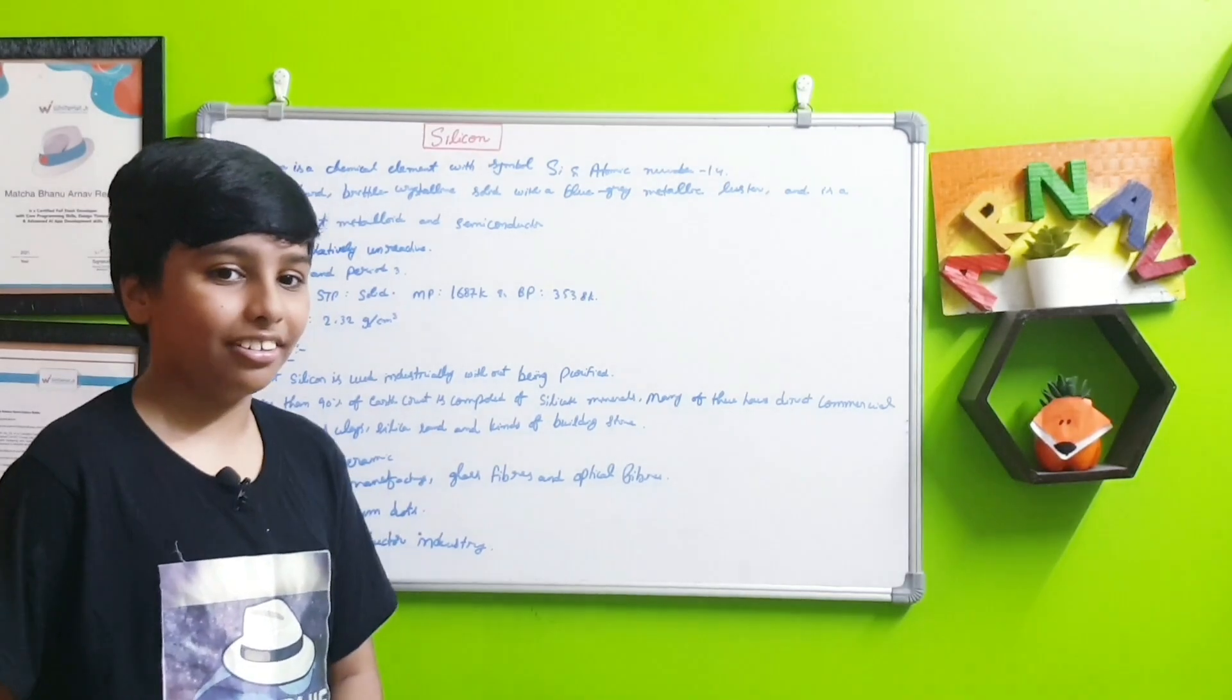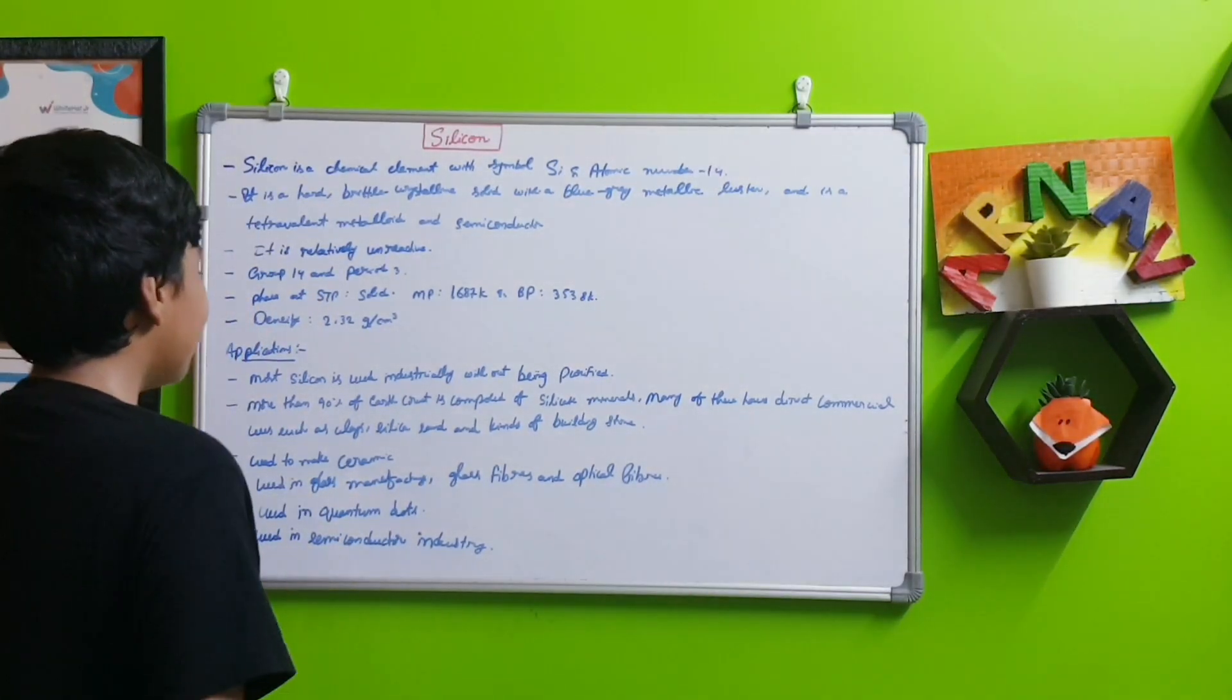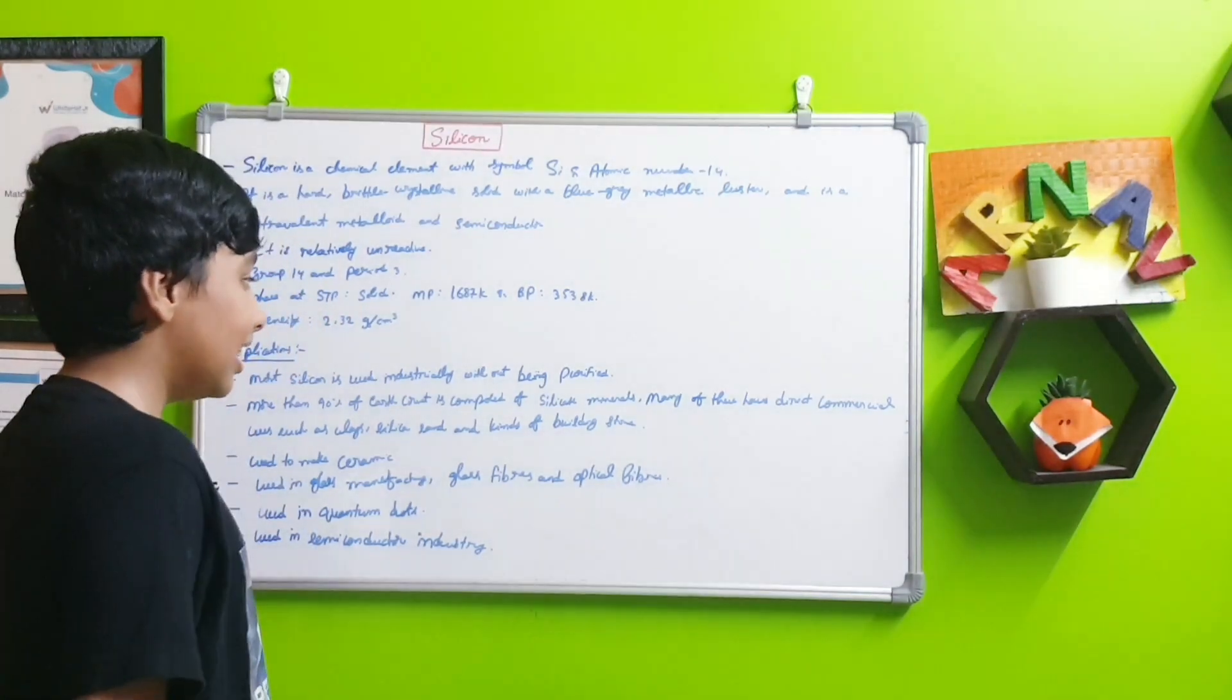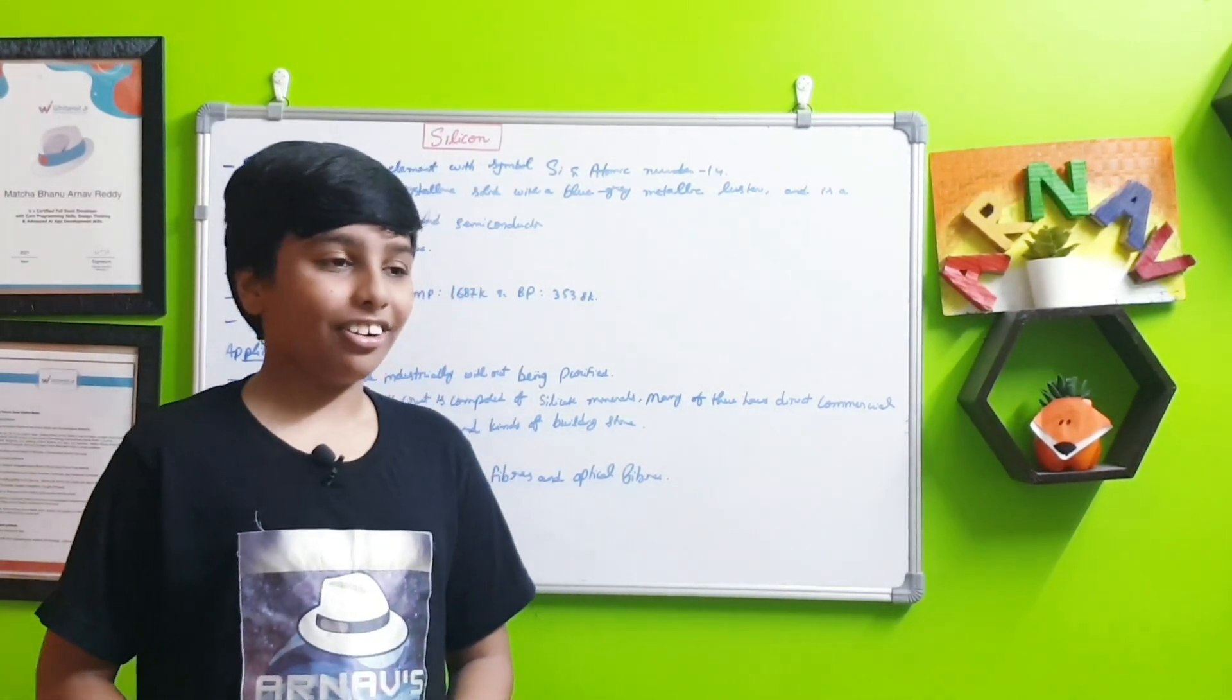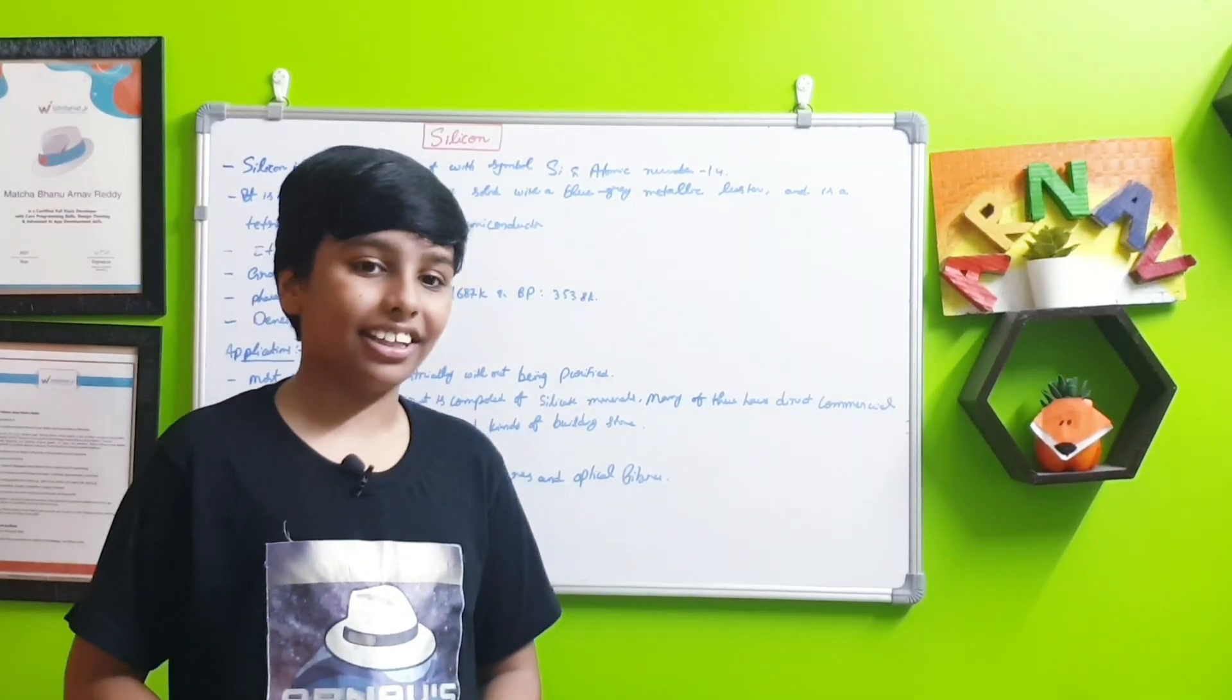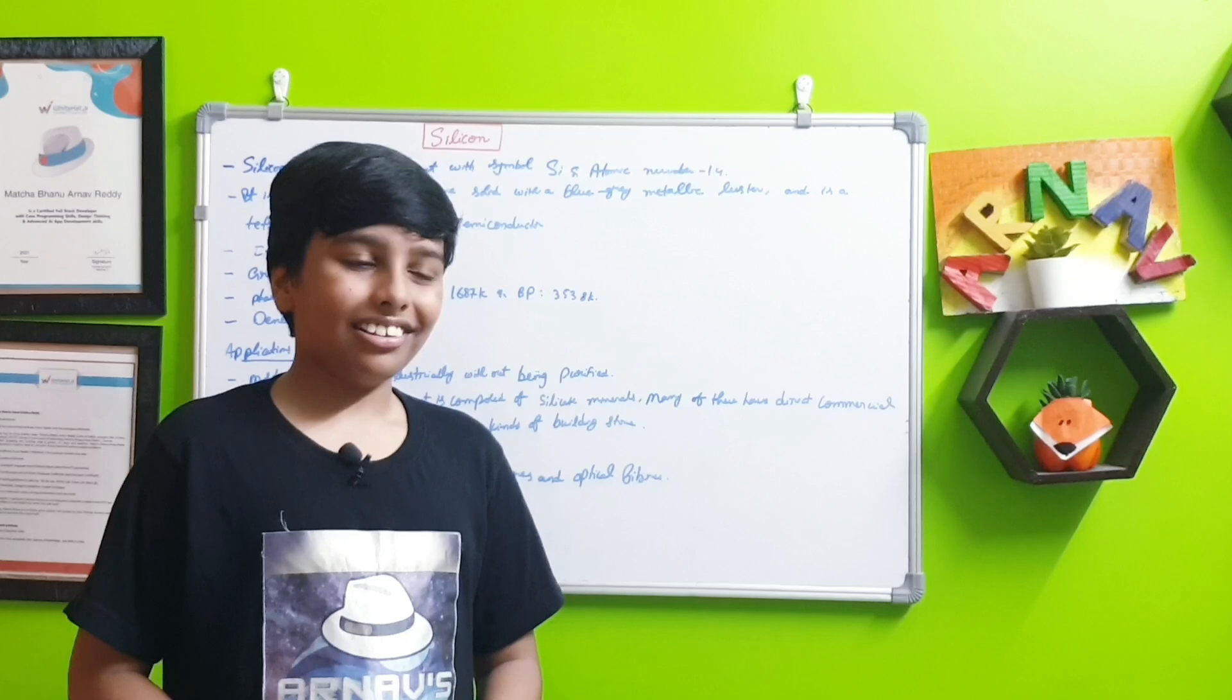Most silicon is used industrially without being purified. More than 90 percent of the Earth's crust is comprised of silicate materials, because rocks mostly contain lots of silicon.